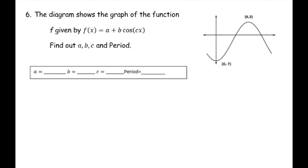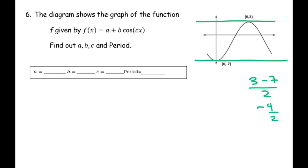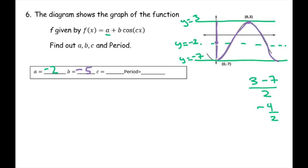Hopefully you're doing these by yourself. We have a min and max, and the midpoint between negative 3 and 7 is negative 4 over 2, which is negative 2. So Y equals negative 2, and the vertical shift is negative 2. The amplitude is 5 going up and down 5. Since it's a reflection, we put a negative. The half-wave is at 6, so the full wave completes at 12 — the period is 12. Then 12 equals 2 pi over C, so C equals 2 pi over 12, which is pi over 6.